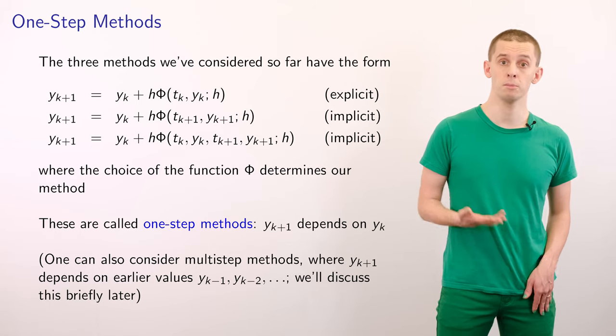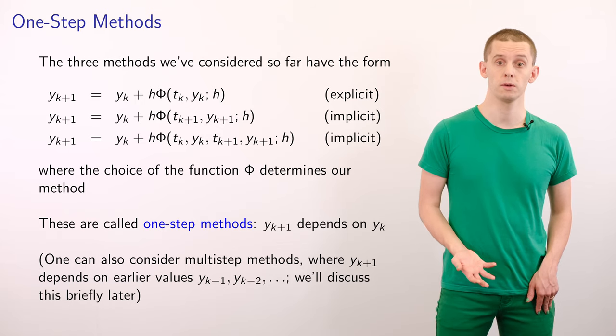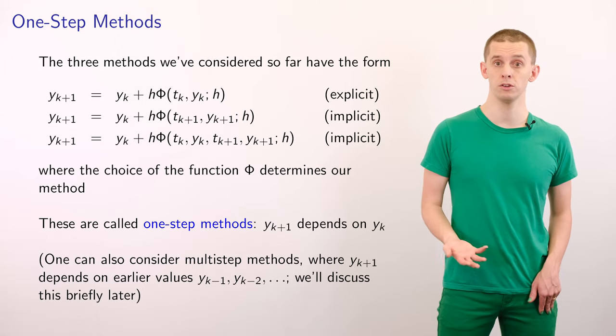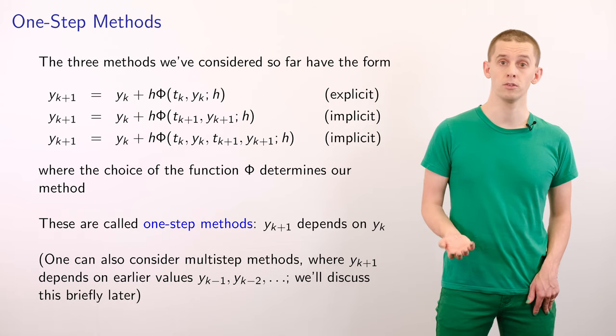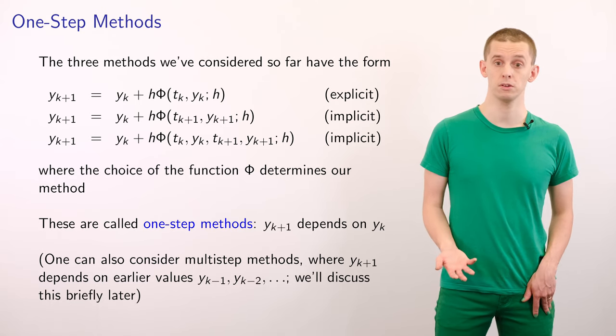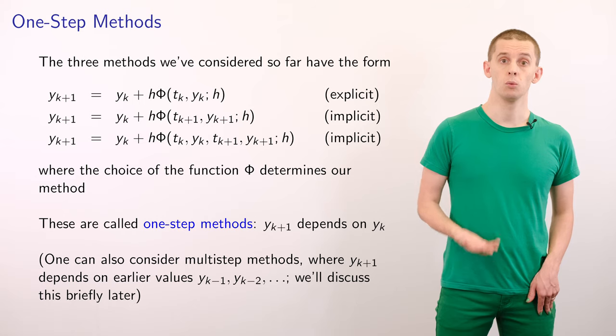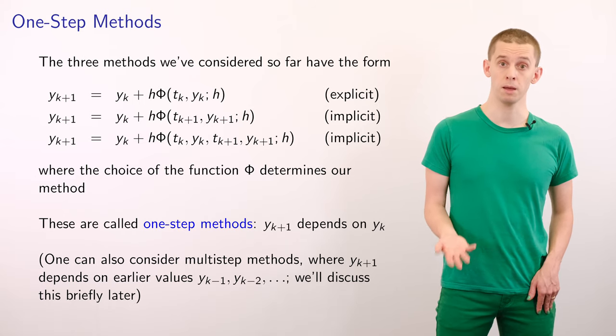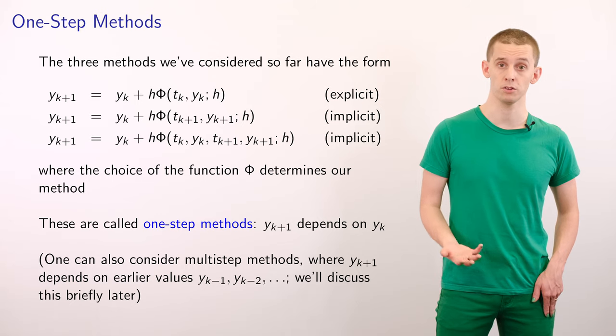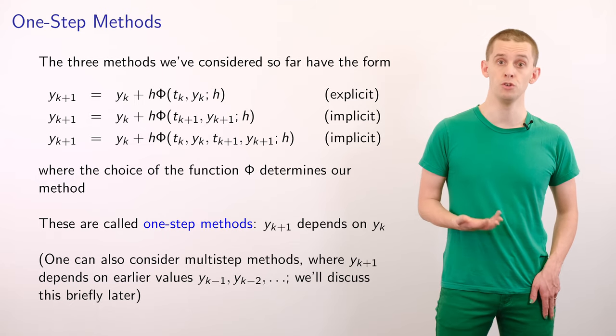If we look at these three methods altogether, the forward Euler, the backward Euler, and the trapezoid method, then we see that they can all fit within a similar framework, where yk plus 1 is equal to yk plus h times some function phi that has some dependence on tk, yk, tk plus 1, and yk plus 1. Because of this, we collectively refer to methods like this as one-step methods, and they allow us to evaluate yk plus 1 in terms of yk. We'll also look a little bit later in the course at multi-step methods, where yk plus 1 might depend on previous values of our solution, like yk minus 1 or yk minus 2. But now we're going to concentrate on these one-step methods and look in more detail at their numerical properties. We'll see you next time.